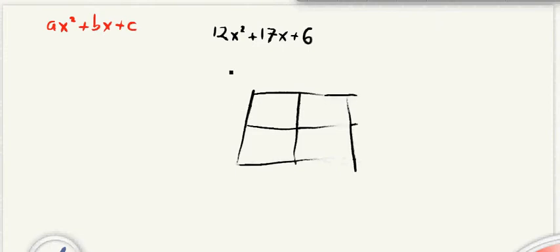And then we're going to put the first term here, the whole thing with the x squared, in the upper left-hand corner. So we're going to put 12x squared right here, and then we're going to put our c. The last thing here is going to go in this last box here. So we're going to put a 6 right there.